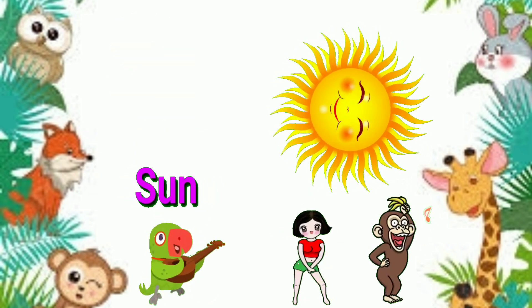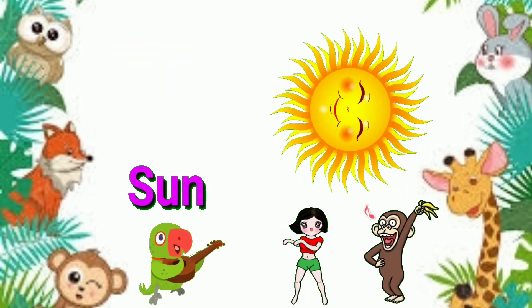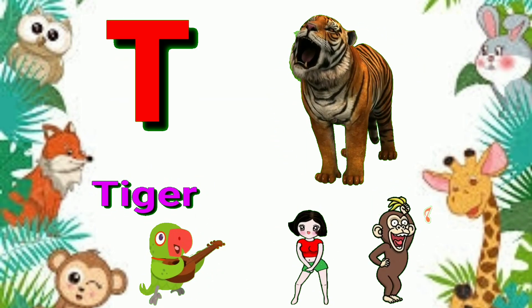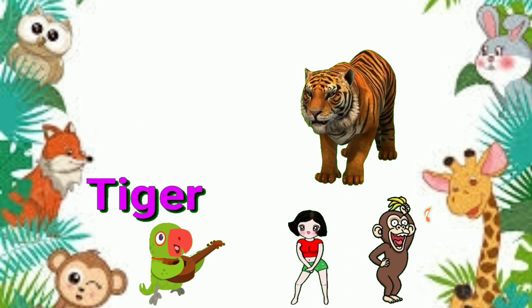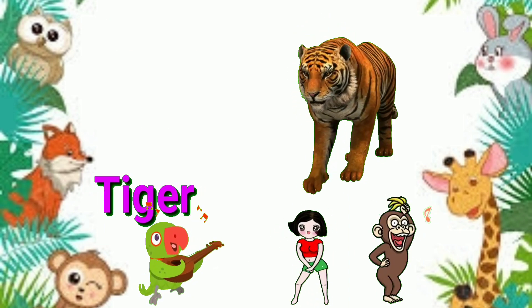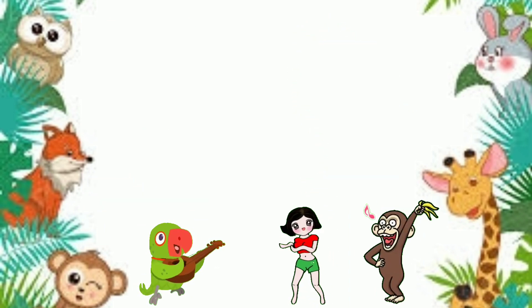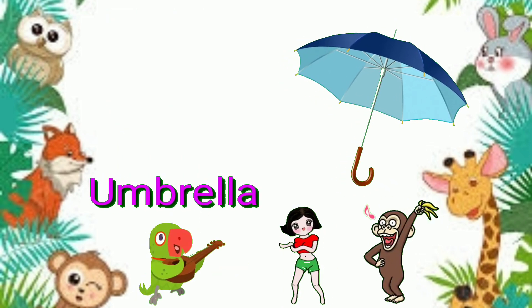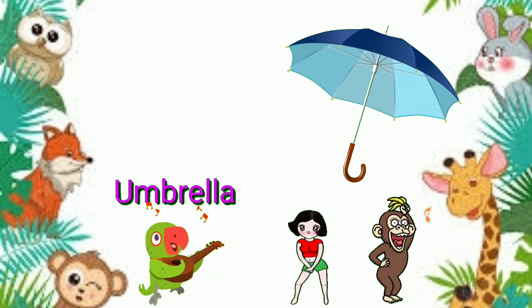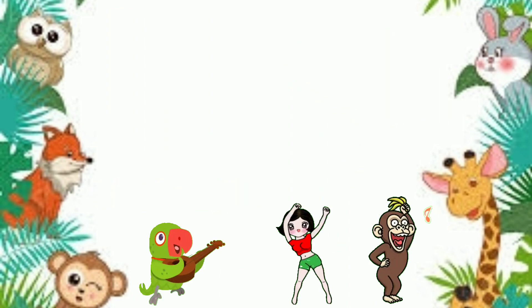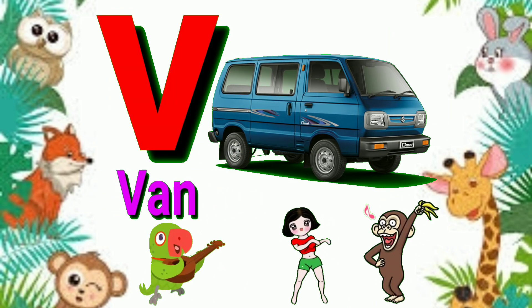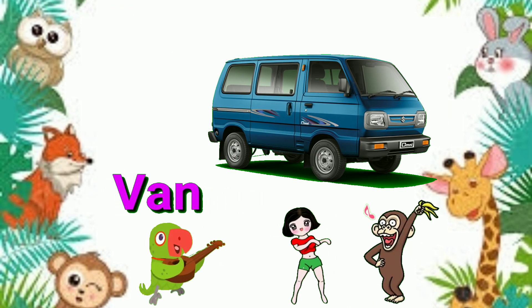R for Rabbit. S for Sun. T for Tiger. U for Umbrella.